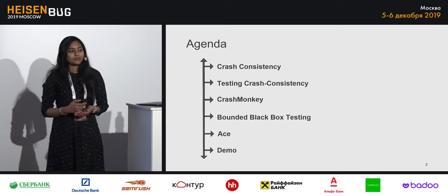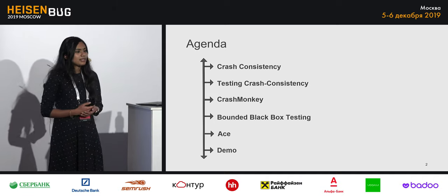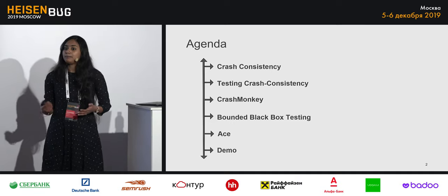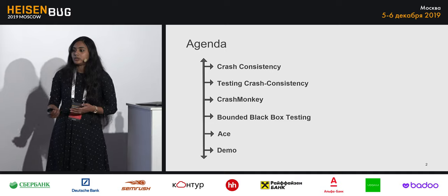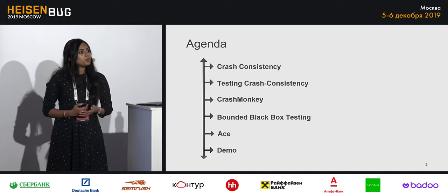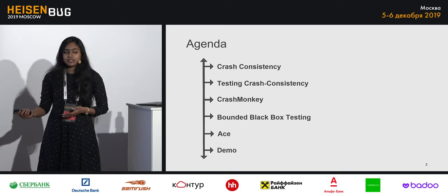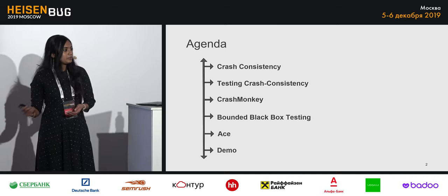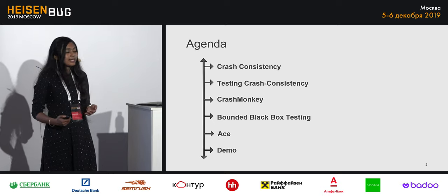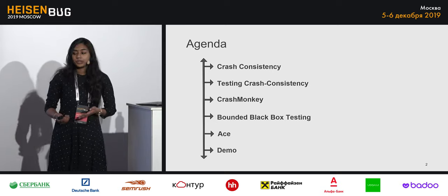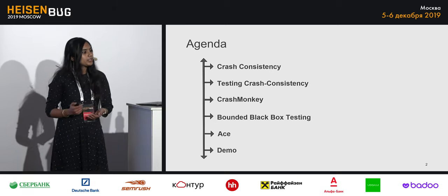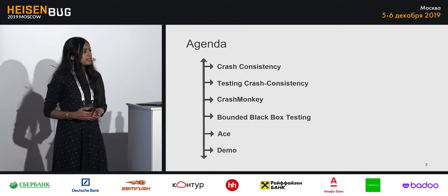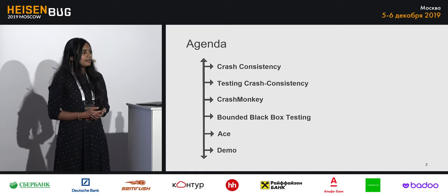The agenda for the talk today is as follows. I'll first introduce what crash consistency is and why it's important from the perspective of a file system. We'll also talk about crash consistency bugs and their impact. Next, we'll discuss how to test for crash consistency bugs and the techniques available today, and why they're inadequate. We'll then cover CrashMonkey, our new technique called bounded black box crash testing, and our implementation called ACE, or the automatic crash explorer. I'll walk through evaluations and end with a short demo.